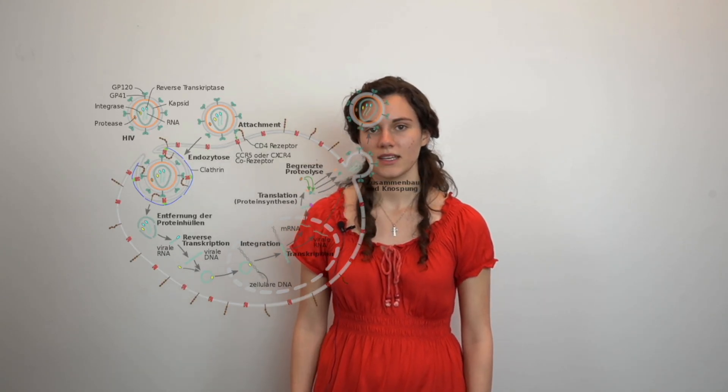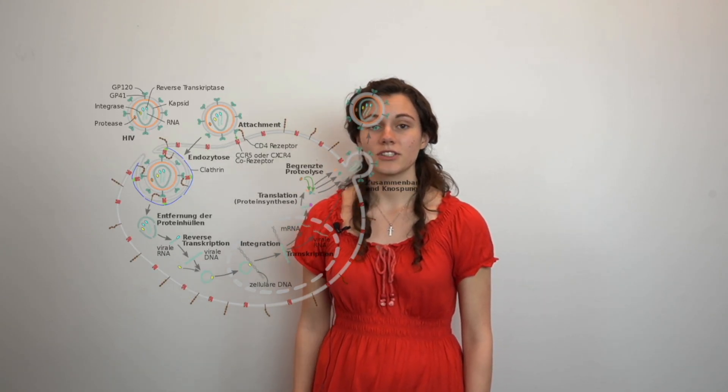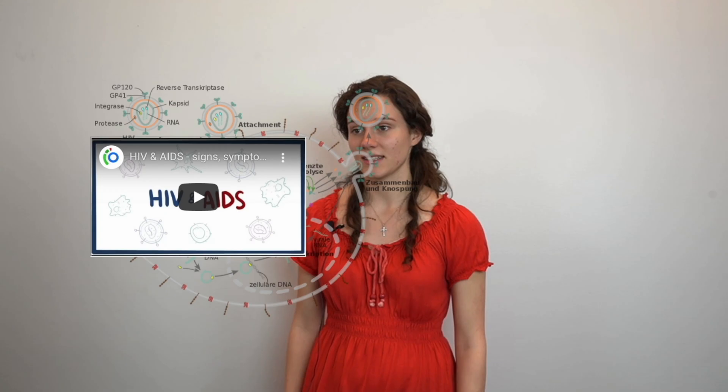Today we're going to discuss white blood cells and killer T cells. In particular, we'll talk about the HIV virus and how it attacks the blood cells and hides from the T cells. We can see this displayed through this diagram of the immune system. Now, we're going to show a quick video demonstrating this process.